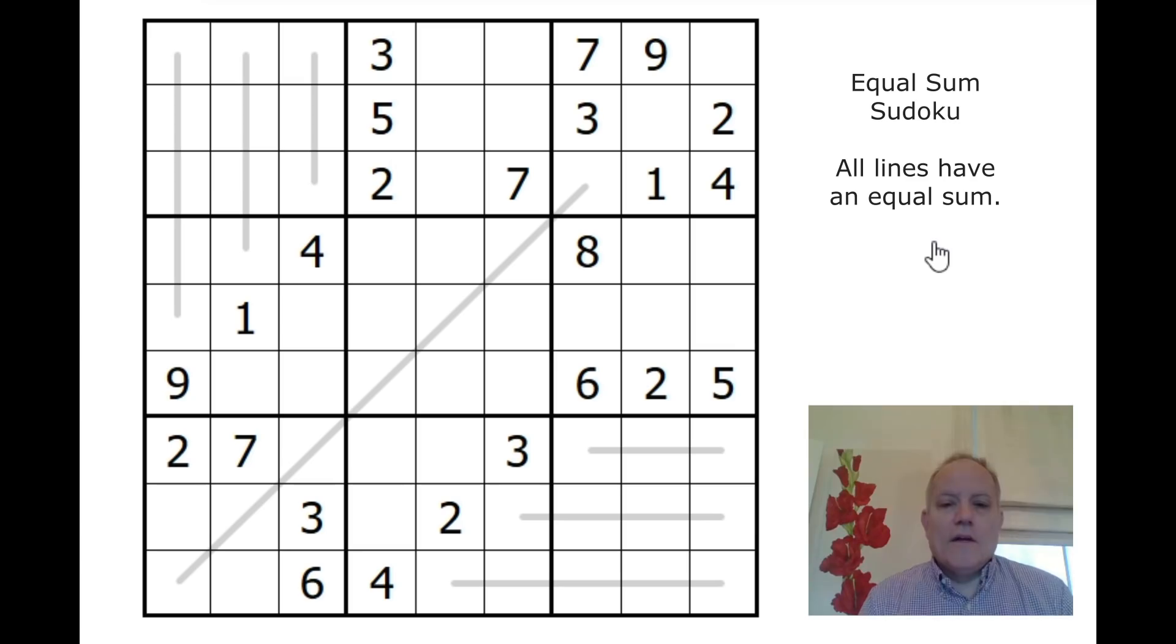So the rules here in equal sum Sudoku are that every line in the grid has the same sum total. So these three cells must add up to the same as these four cells, which are the same as these five cells, the same as these seven, same as these three, the same as these four, the same as these five. So quite a lot of the same sums. And if we can find out what that sum is, we'll be well away. But I suspect we won't get there for a long time. And there's quite a lot of givens in the grid.